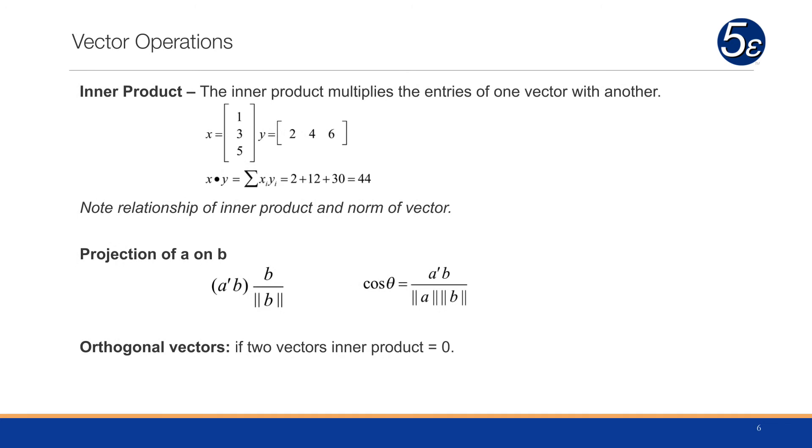Some basic operations: the inner product multiplies the entries of one vector with another. We multiply each entry of the column vector x with each entry in the y row vector, but we add them together. We multiply 1 by 2, add 3 times 4, and add 5 times 6. The inner product of these two vectors will be 44. Two vectors are considered orthogonal if their inner product equals zero, meaning they form a 90 degree angle in space and are independent.